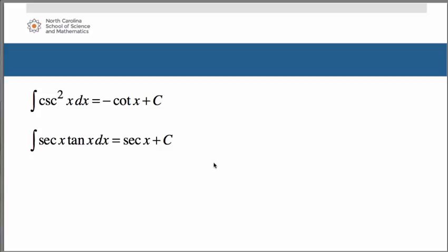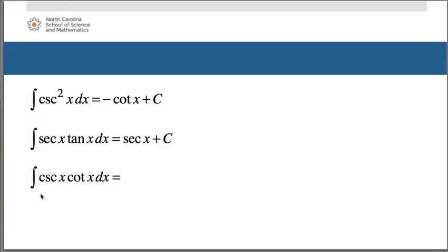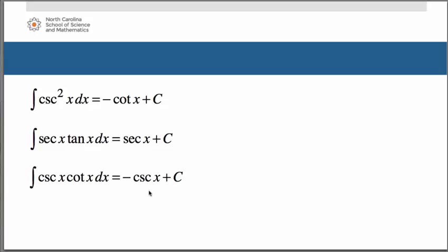There was one more derivative rule for trig functions you knew. What about the antiderivative of cosecant of x cotangent of x dx? What did we take the derivative of and get cosecant cotangent as the answer? That would be negative cosecant of x plus c. The derivative of cosecant of x is negative cosecant cotangent, so the negative times negative turns positive — that's why you don't have a negative in your integrand.